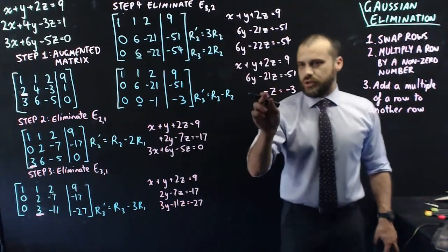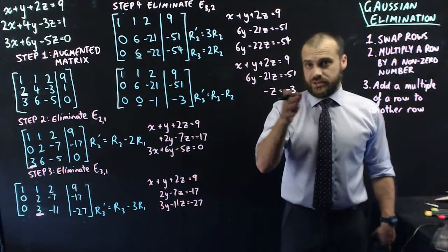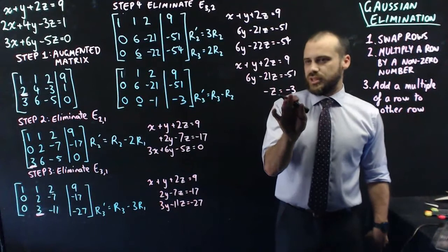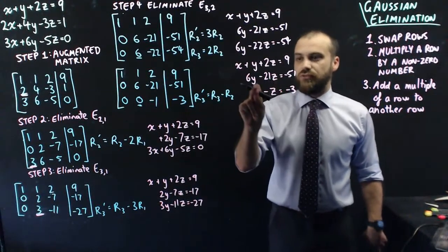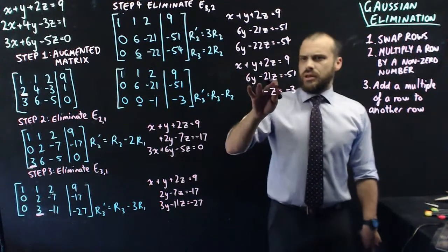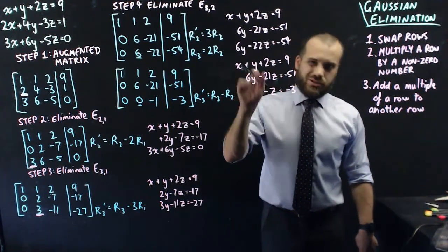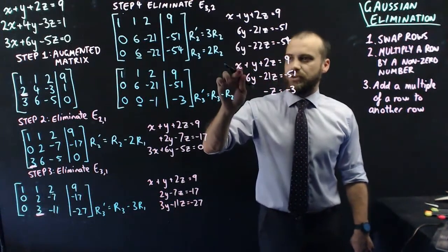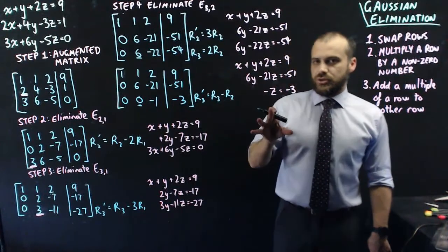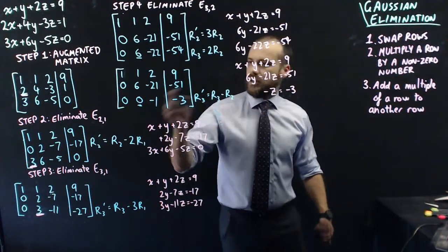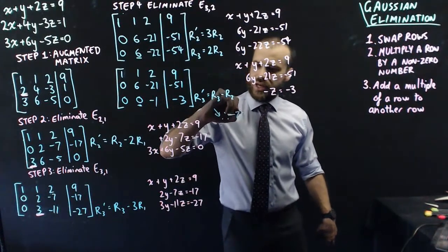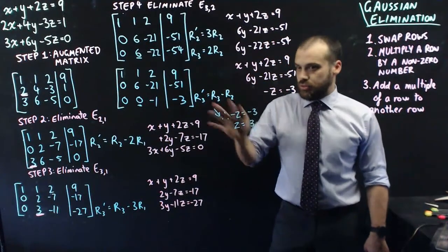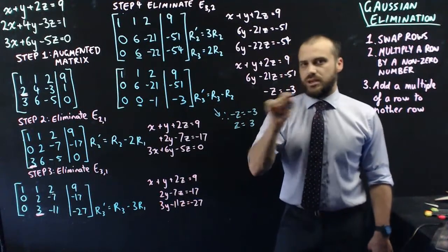The update looks beautiful. We've got negative z equals negative three, so z equals three. We've got six y minus twenty-one z equals negative fifty-one - if I know that z is three, I can substitute z equals three into that to find y. I'm one third of the way towards solving this. I know that z is equal to three.